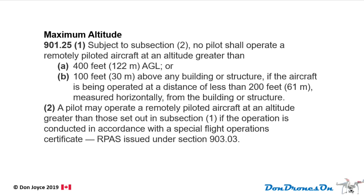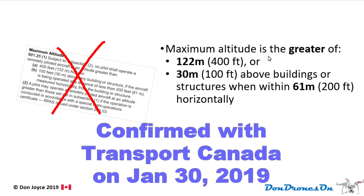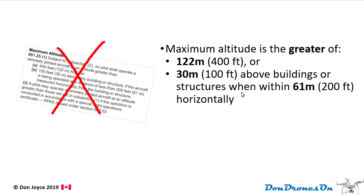Here's what they really mean in Don's simple language. What they really mean is that your maximum altitude is the greater of 122 meters or 400 feet, or 30 meters or 100 feet above buildings or structures when within 61 meters horizontally. Okay, so it's still a little confusing.